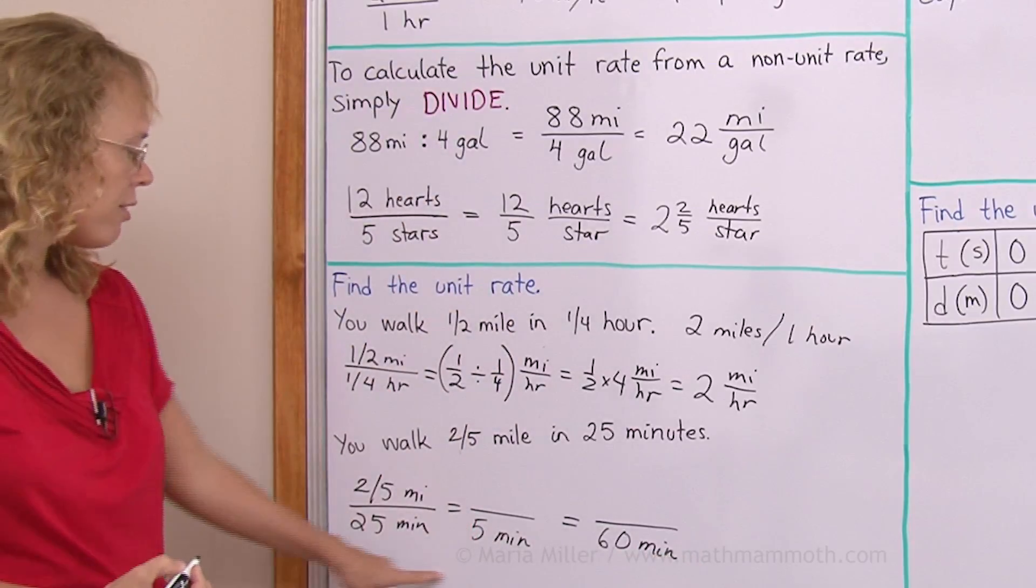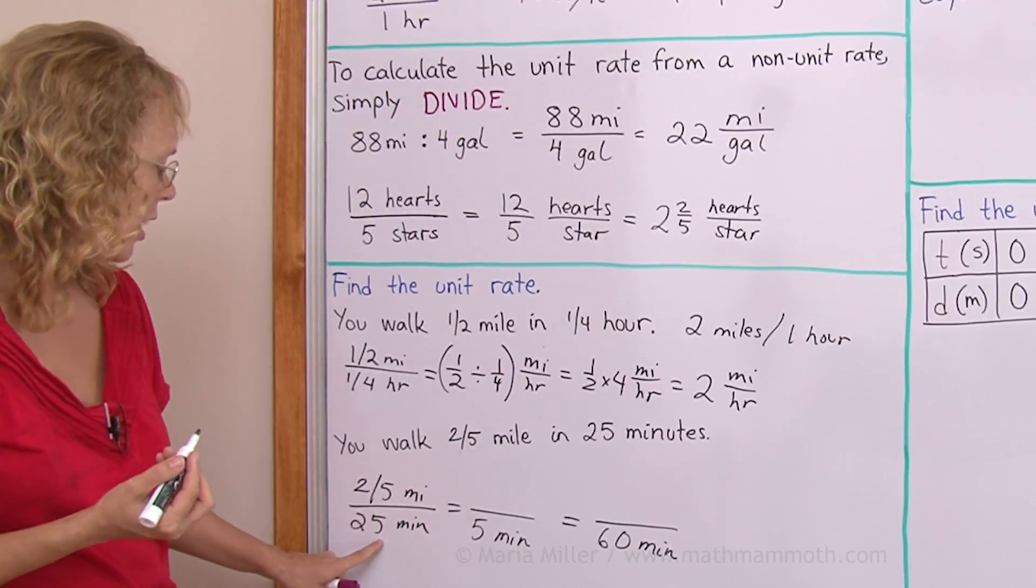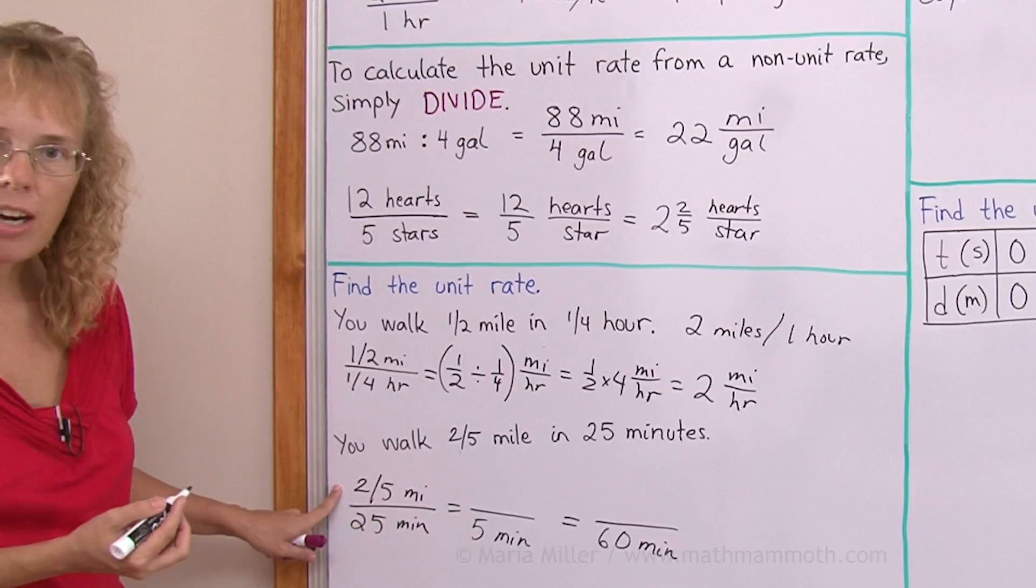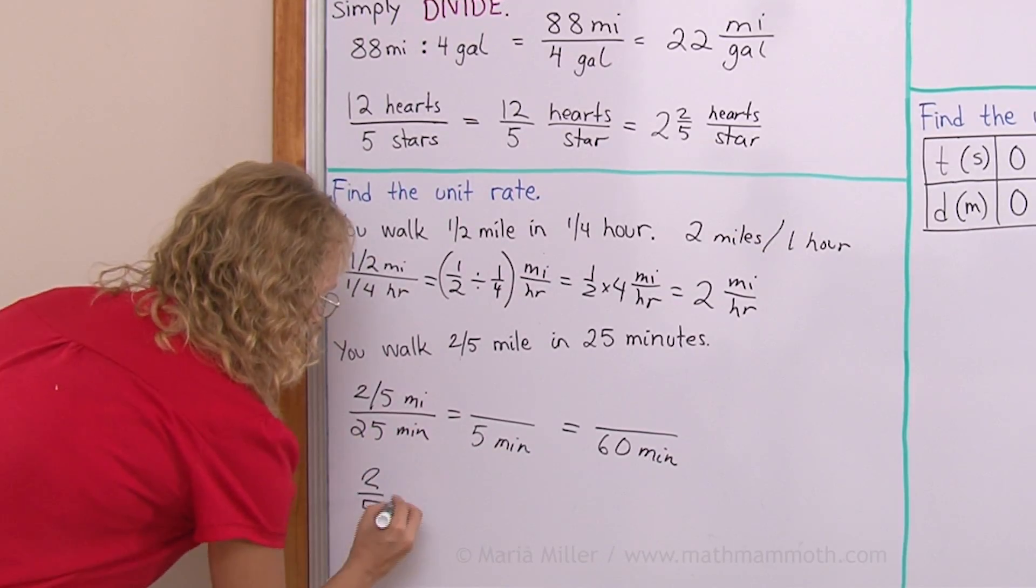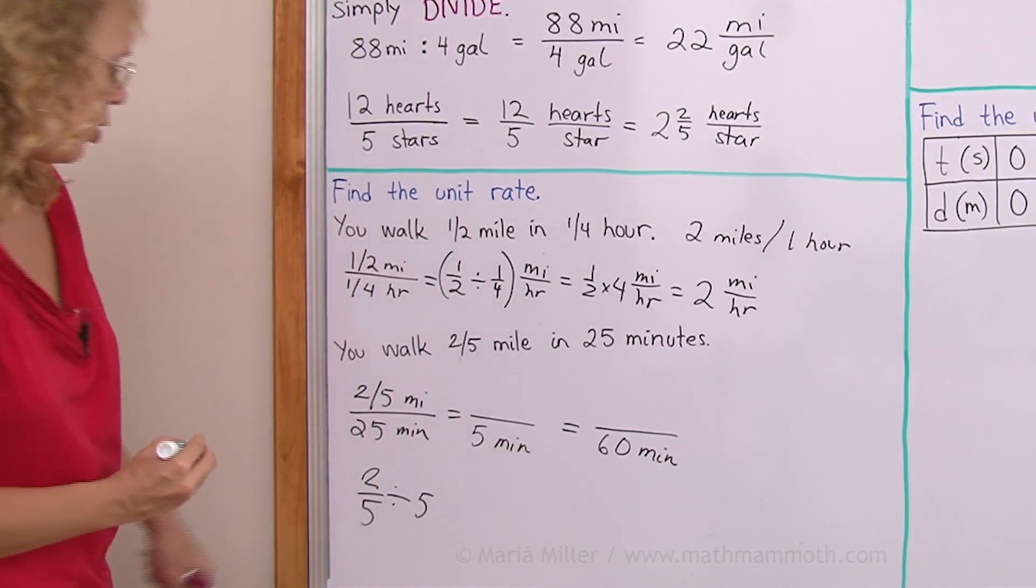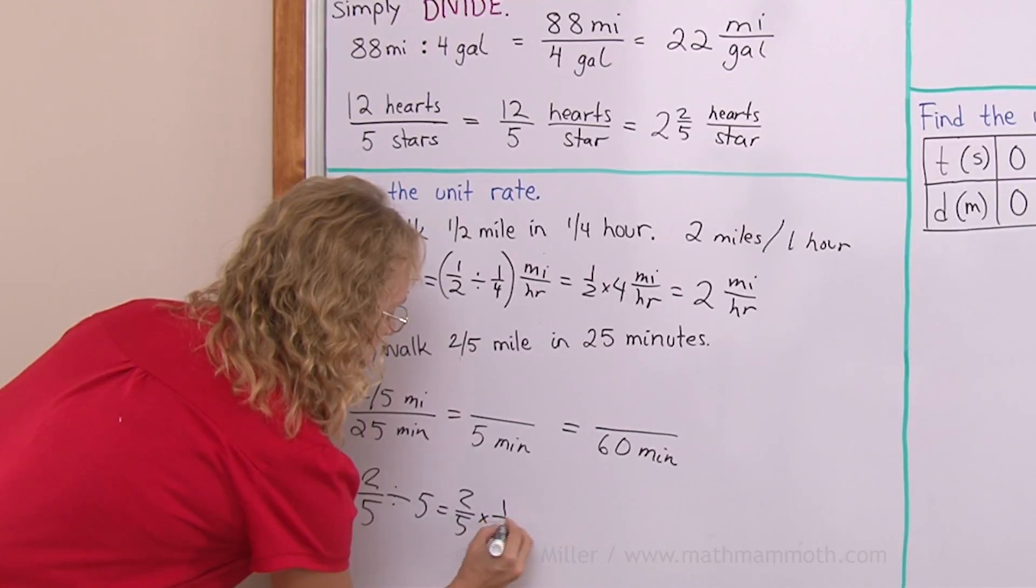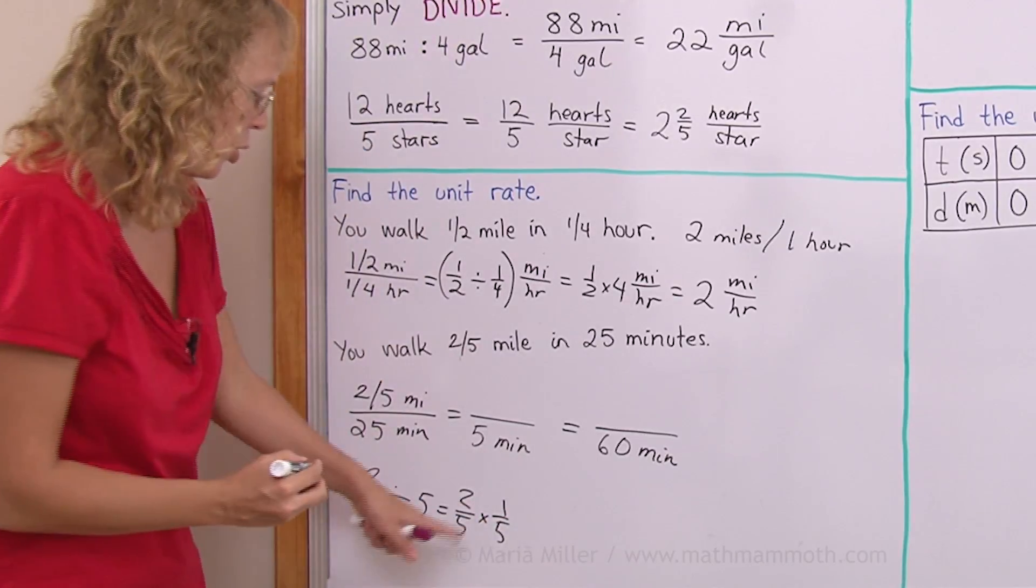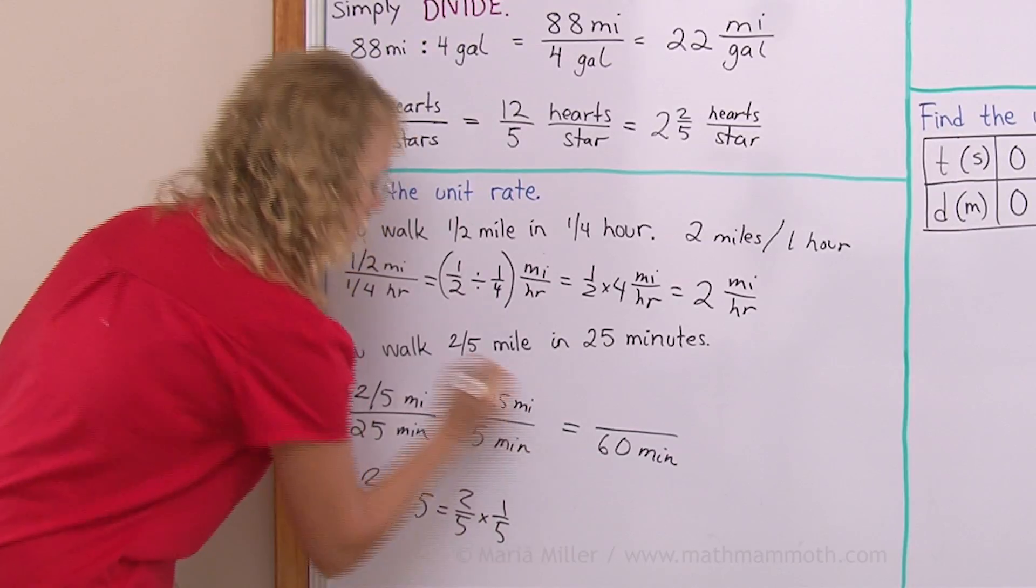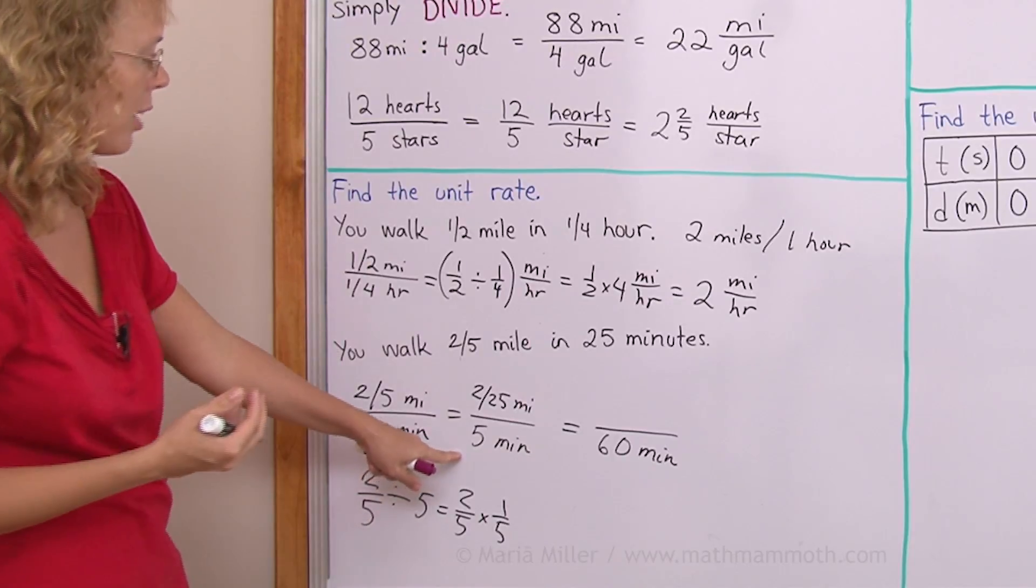To find the rate per five minutes would be, of course, just one fifth as much, right? So I divide by five. Two fifths divided by five. If your fraction math is not quite clear, let me divide it here. Two fifths divided by five is the same as two fifths times one fifth. So we get two over 25 miles per five minutes if somebody's walking this slowly. It's a slow rate of walking.